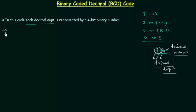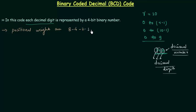Now let's talk about positional weight in case of BCD code. The positional weights associated to the binary bits are 8, 4, 2, 1. Hence, sometimes BCD code is called as 8421 code. Don't confuse 8421 code with BCD code — they are the same.